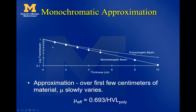A graph of log transmission versus thickness shows a straight line for a mono-energetic beam — with a constant linear attenuation coefficient — while the poly-energetic beam, which is what we use clinically, curves as it attenuates differently with depth.